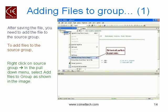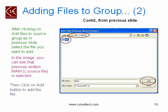The next step is to add your files to the project. To do that, right-click on the Source Group in the project window, which opens up a pull-down menu. Select the option Add Files to Group Source Group 1. This opens up a dialog box where you can choose the main.c source file to be added to your project. Select the files you want to add and then click the Add button.